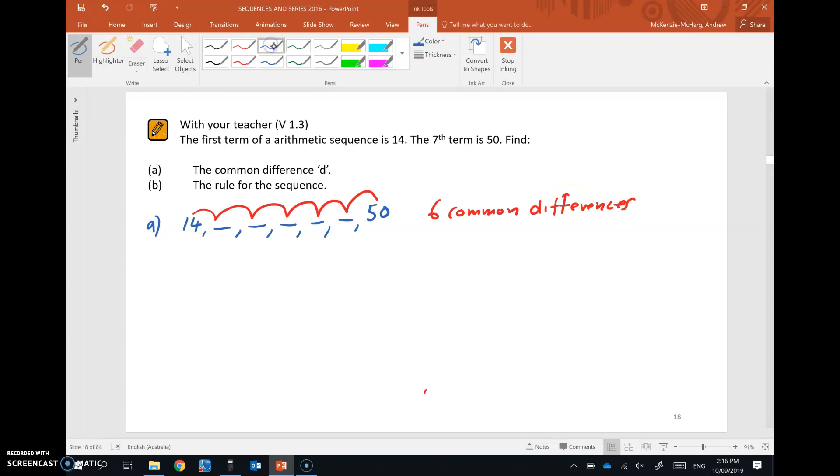So what that means is that we start with our term 1, number 14, and if we add to this 6 common differences, then we'll get 50. So now it's a matter of rearranging to make D the subject, get D on its own, and see what D is equal to. That's the common difference. Go ahead and try that, pause the video, and then I'll have a go at it.